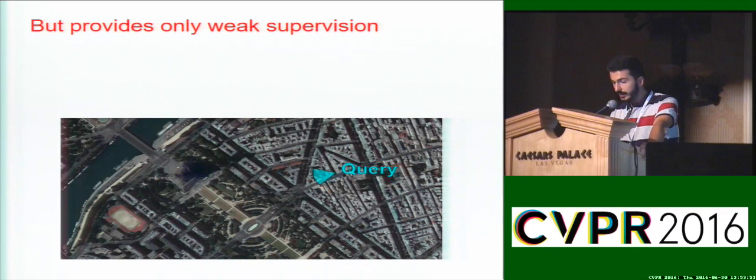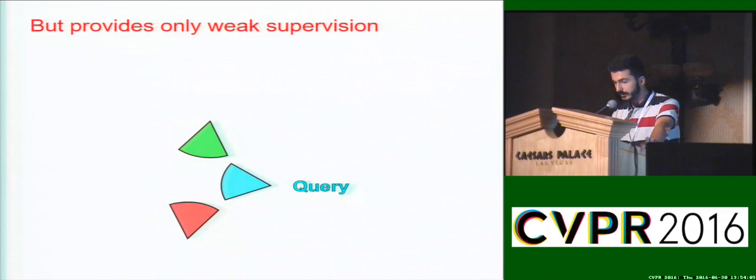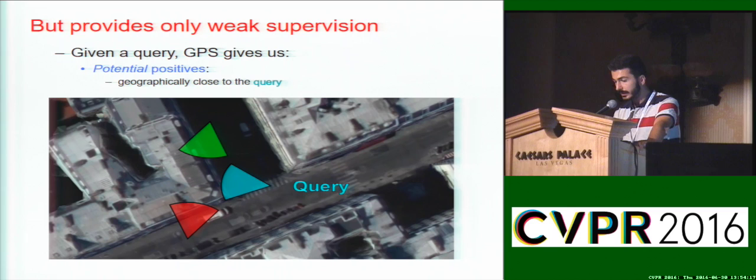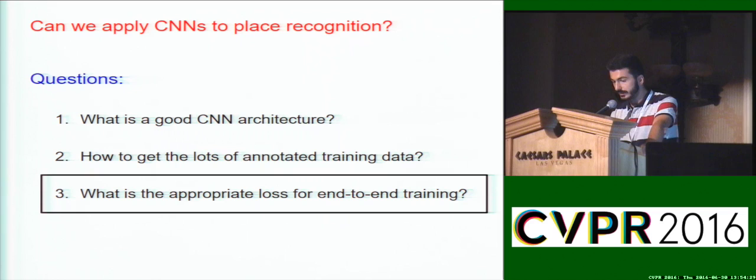However, the data only comes with weak supervision in the form of GPS. Given a query, GPS gives us definite negatives, i.e. images that are far away from the query. However, images that are close to the query are not necessarily positives, as some nearby images can have no overlap with the query because they are taken around the corner from it. Therefore, GPS gives us definite negatives and only potential positives, and we need to explicitly handle the fact that we only have weakly supervised training data by designing the appropriate loss and training procedure.